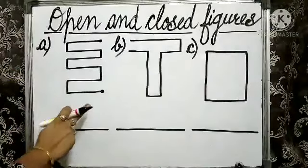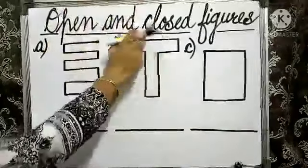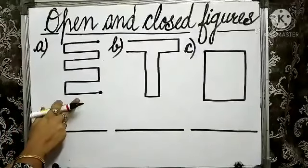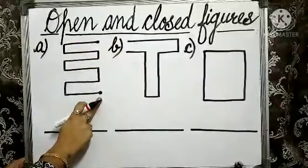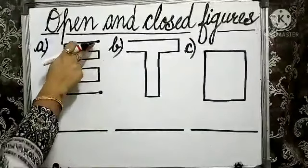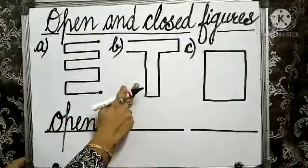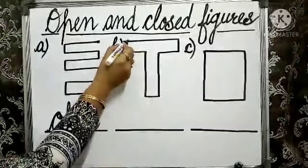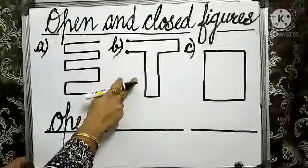Children, look at these figures. We have to identify whether these figures are open figures or closed figures. Let us check one by one. As you can see, this figure starts from here and it ends at a different point, so it is an open figure because it has different starting and end points. Moving to the next example — this figure also starts from one point and ends at the other point, so it is also an open figure.